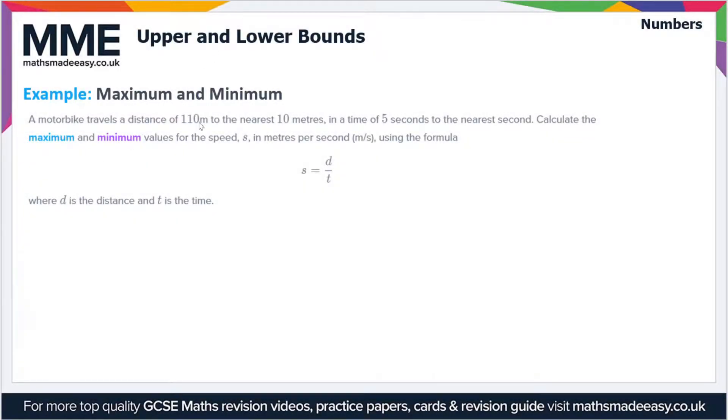Welcome to the Maths Made Easy tutorial on upper and lower bounds. In this video we're going to go through another example on maximum and minimum values, but this time we've got a division rather than a multiplication. A motorbike travels a distance of 110 meters to the nearest 10 meters in a time of 5 seconds to the nearest second. Calculate the maximum and minimum values for the speed in meters per second using the formula speed equals distance over time.